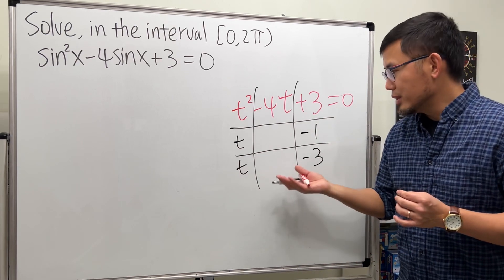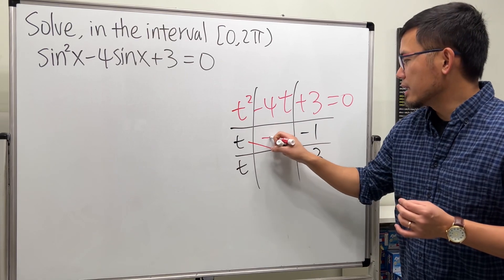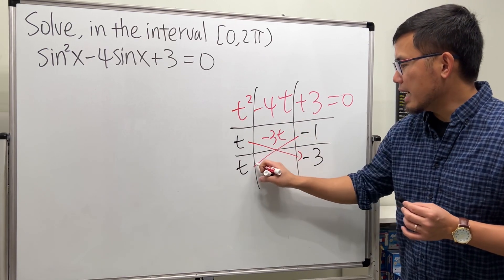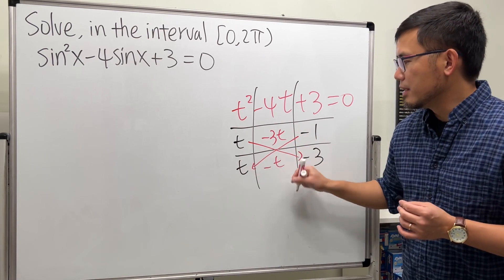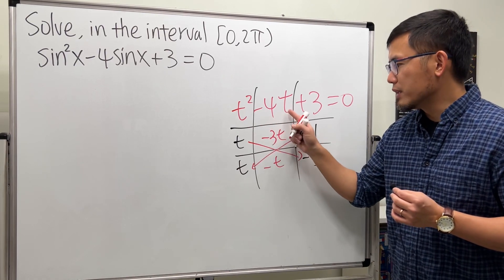You can double check. This times this you get negative 3t, and this times that you get negative t. Together we do end up with negative 4t.